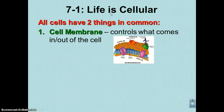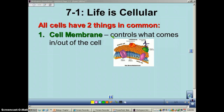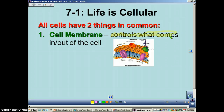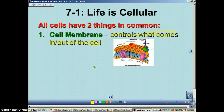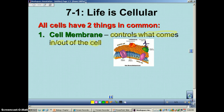Every single cell has a cell membrane. Doesn't matter if you're prokaryotic or eukaryotic, you're going to have a cell membrane. Cell membranes have some of the most important jobs ever — they control what comes in and what comes out of the cell, which is an extremely important job. For example, nutrients come in through the cell membrane, and any waste or other cell materials that need to be moved out are all controlled by the cell membrane.